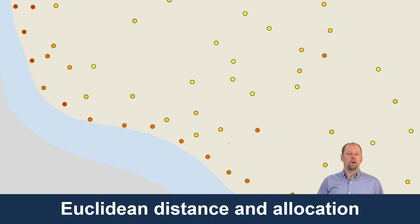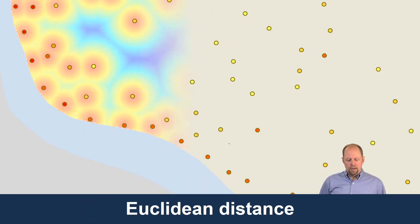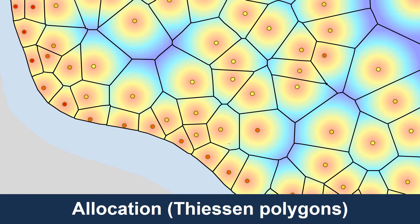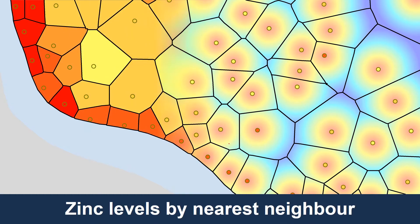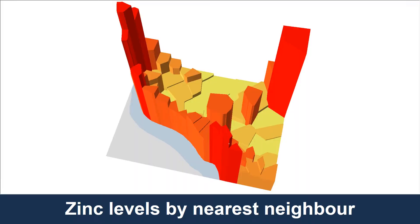Let's try the same method for our zinc levels with the Dutch soil sediment dataset. First I'll do Euclidean distance — you don't have to do this every time, but I do it to help visualize what's happening. Here are our Thiessen polygon boundaries using the allocation tool, and here are our zinc levels based on the nearest neighbor method. Remember, this is an exact interpolator. This actually is not bad — you're getting a decent surface based on the existing sample points. The size of the polygon is related to how many other sample points are nearby.